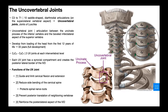Welcome back to Anatomy and Physiology on Catalyst University. In this video, we're going to talk about a joint that's unique to the cervical spine — the uncovertebral joint.